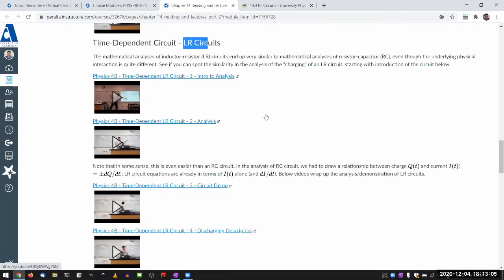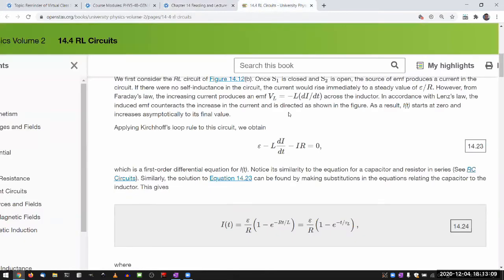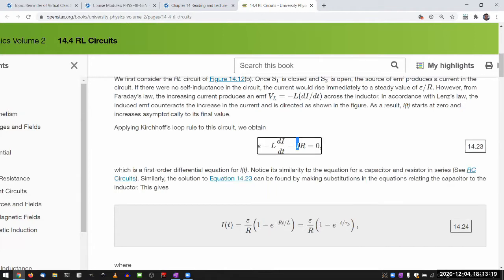In fact, if you look at it carefully, the inductor resistor circuits are actually a little bit simpler because with the capacitors, you actually have to go through another step to write down current is equal to dq dt. This circuit just starts out with the current as the main dynamical quantity and you just stick with it. You don't have to worry about charge.